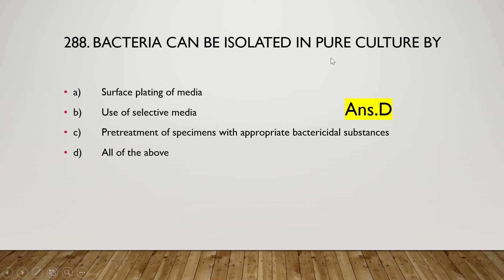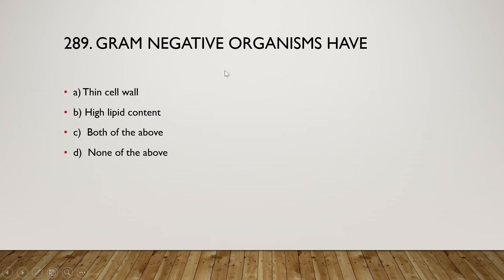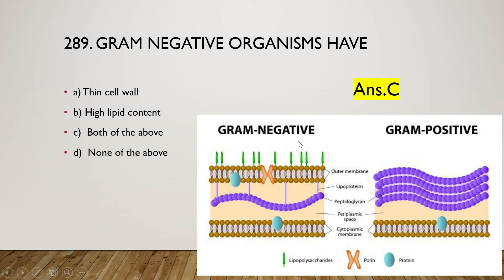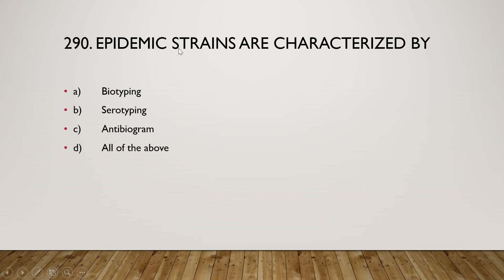The next question is: gram-negative organisms have (A) thin cell wall, (B) high lipid content, (C) both of the above, or (D) none of the above. The right answer is option C — both. Gram-negative bacteria have a thin peptidoglycan layer and an outer membrane giving high lipid content. In contrast, gram-positive bacteria have a thick peptidoglycan layer but no outer membrane, resulting in low lipid content.